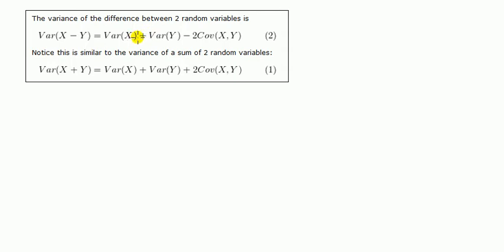Let's look back at the variance of the difference. Now often students write minus on both terms. But if you just think that variance can't be negative, then you can see that if you have a minus here and a minus here, then one number minus two numbers could well be less than zero — it could be negative, which you can't have for variance.